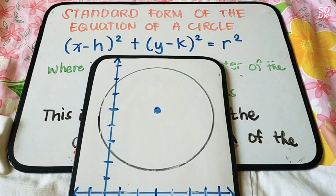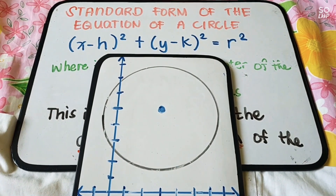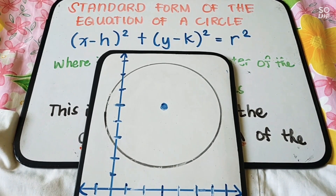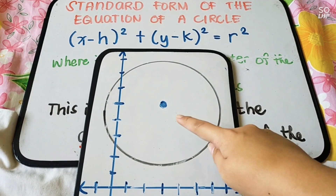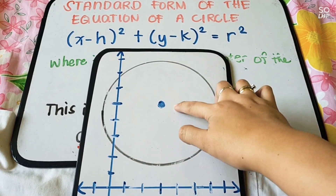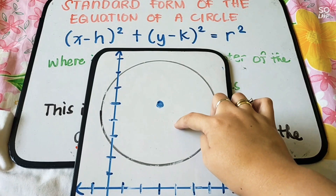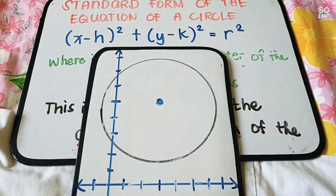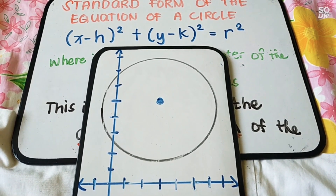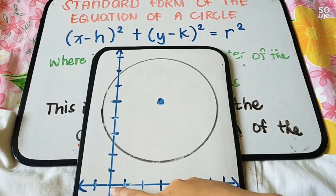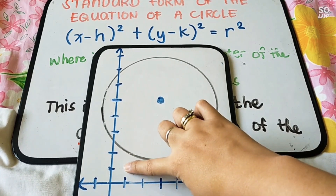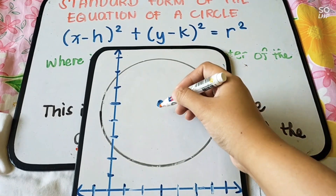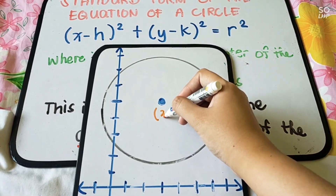Let's take a look at the given circle. We are going to find the center — let's find the x and y coordinates from the given Cartesian plane. Let us find the x-coordinate. Since this is the origin, we start counting: 1, 2, 3. So the center is at x equals 3.